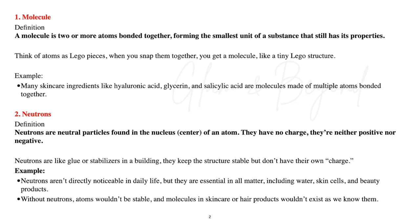Number one: molecule. A molecule is two or more atoms bonded together, forming the smallest unit of a substance that still has its properties. Think of an atom like a Lego piece — when you snap them together, you get a molecule, like a tiny Lego structure. Many skincare ingredients like hyaluronic acid, glycerin, and salicylic acid are molecules made up of multiple atoms bonded together.